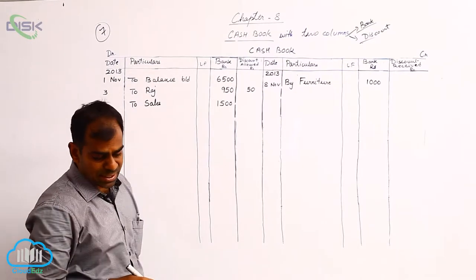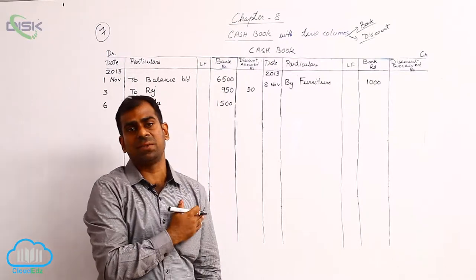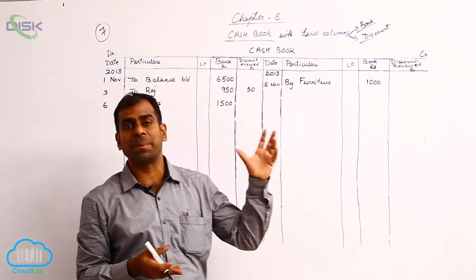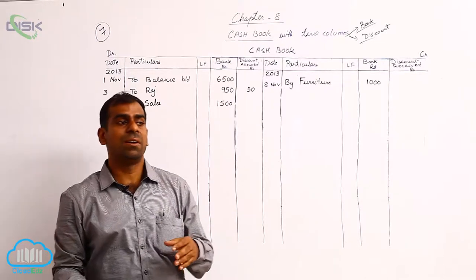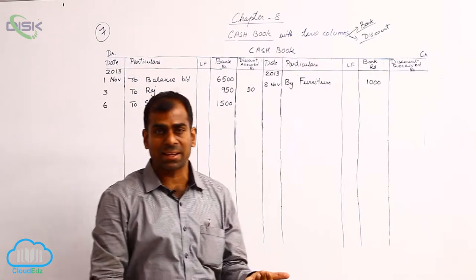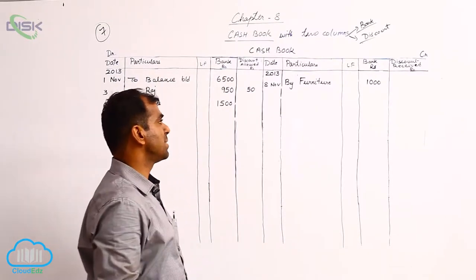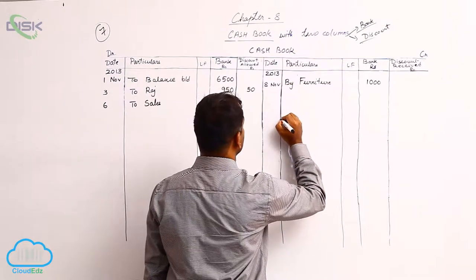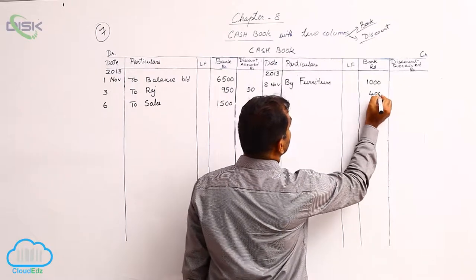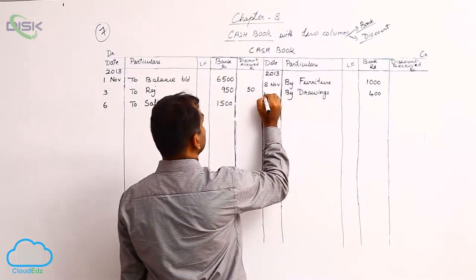The next transaction is on the 10th: withdrawn from bank for personal use. You are taking business money from the bank for personal purposes, not business purposes. Whenever business money is used for personal work it becomes drawings — the owner is taking back resources for domestic use. Cash goes out from the business, so bank balance comes down. Record it on the credit side: amount 400, reason 'drawings'. Date is the 10th.